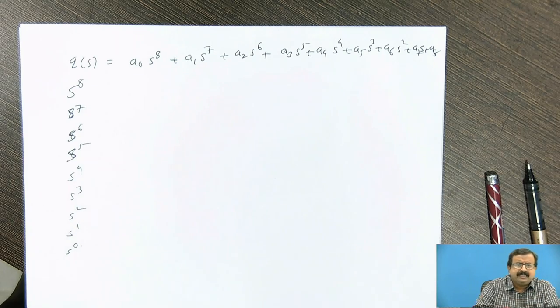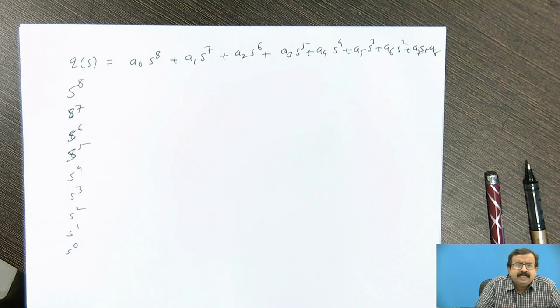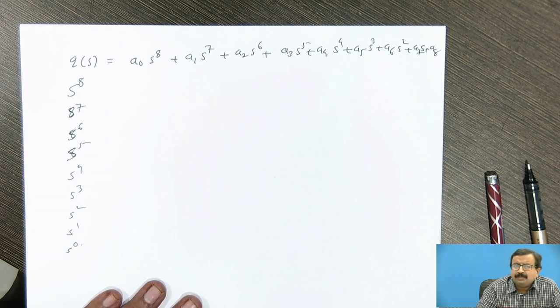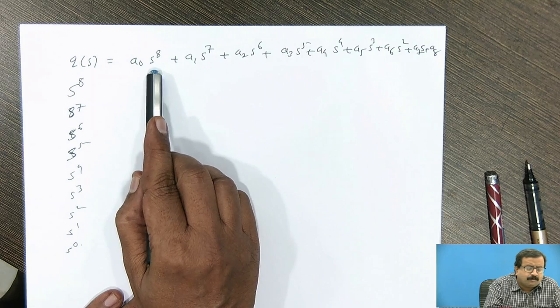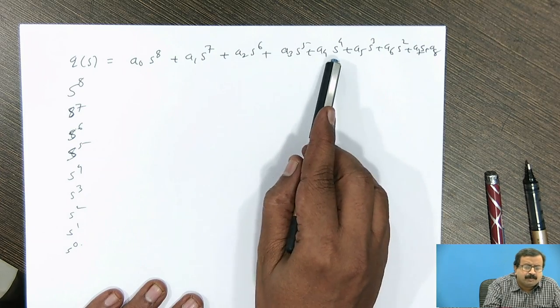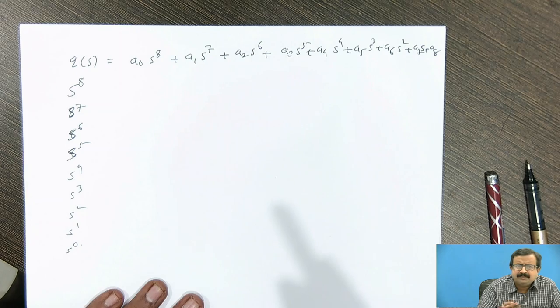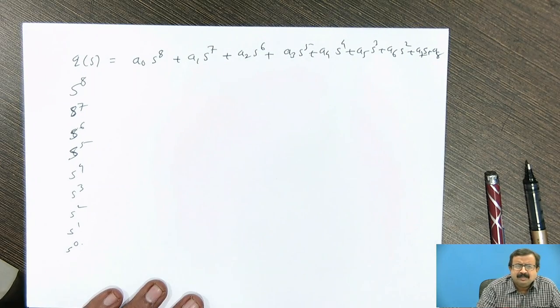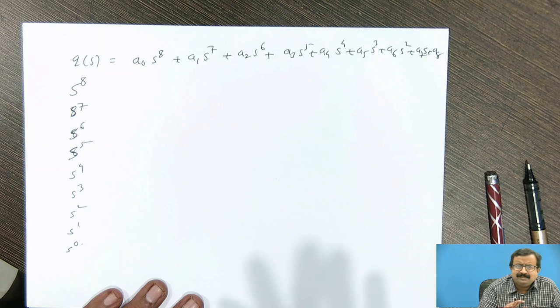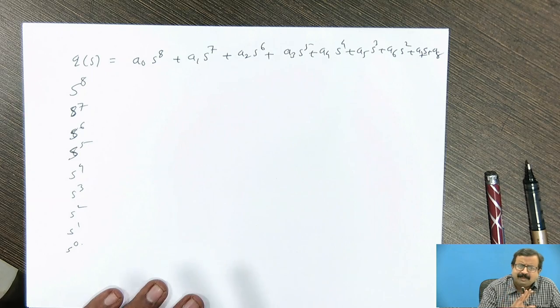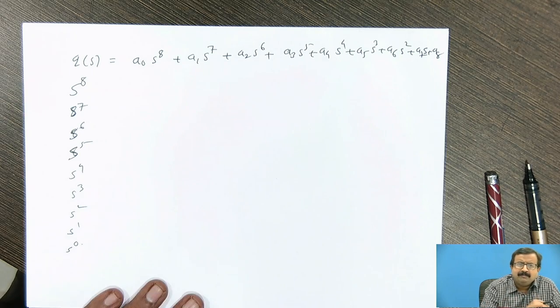So how is the Routh's table prepared? First thing is, he says that write the equation that is given to you, a polynomial equation in decreasing order. For your understanding I have taken 8th order polynomial. You write here 8th order polynomial, then 7th, 6th, 5th, power 4th, 3rd, 2nd, 1 and 0. Now remember, I may give you a numerical or a problem in which some part is missing. So as far as your analysis is concerned, you may say that as there is one term missing, the system is going to be unstable. Okay, no problem. System is unstable, I agree.